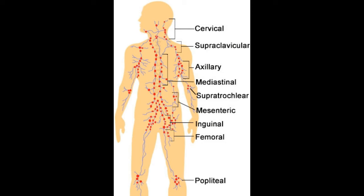Mesenteric lymph nodes: Distributed in the lower abdomen, they lie close to the small intestine. They drain the ileum, jejunum, colon and upper part of the rectum. Inguinal lymph nodes: These nodes are located in the groin area. They may be superficial or deep lymph nodes. They receive lymph from the genital area, buttocks, anus, abdominal wall and legs.